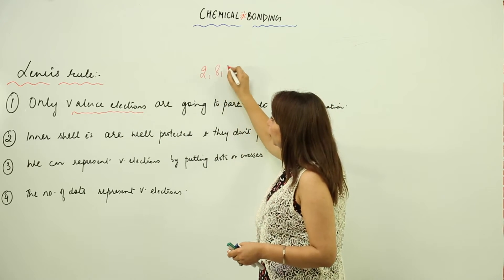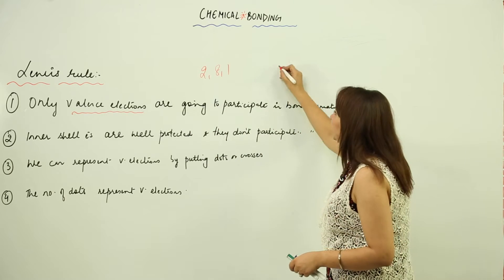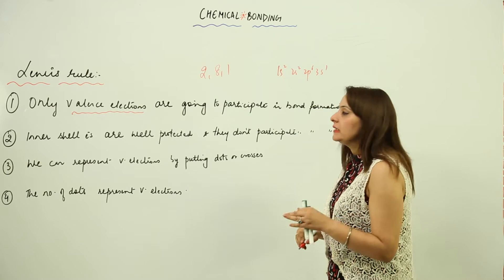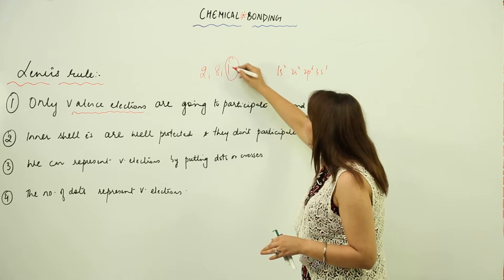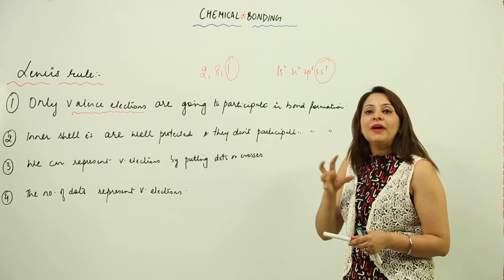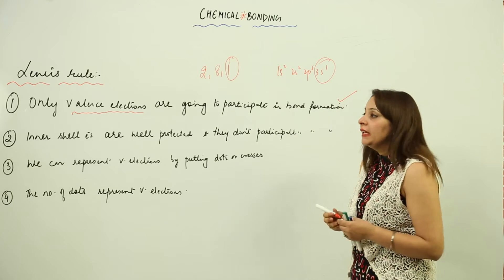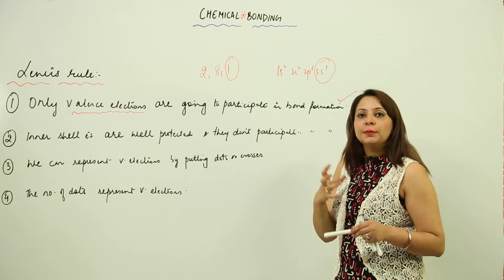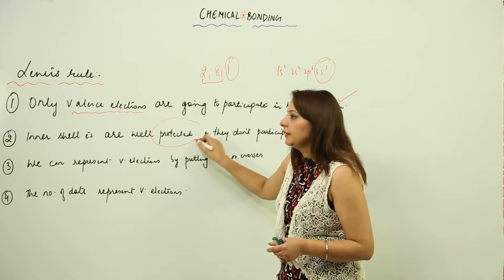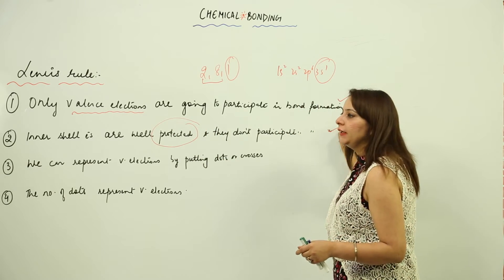Suppose I write a configuration for sodium — we know the outermost electron is 1. So that means only the valence shell electrons are going to participate in the bond formation; only one electron is going to participate. The inner shell electrons are actually well protected and they don't participate in any kind of bond formation.